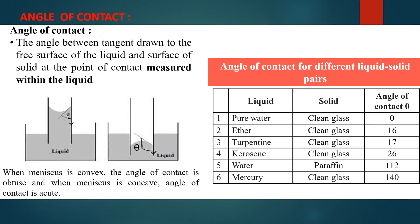When a liquid surface comes in contact with a solid surface, it forms a meniscus which can be either convex or concave depending upon the solid-liquid pair. To understand these different shapes of meniscus, we define angle of contact. Angle of contact is defined as the angle between the tangent drawn to the free surface of the liquid and the surface of the solid at the point of contact, measured within the liquid. When the meniscus is convex, the angle of contact is obtuse; when the meniscus is concave, the angle of contact is acute.